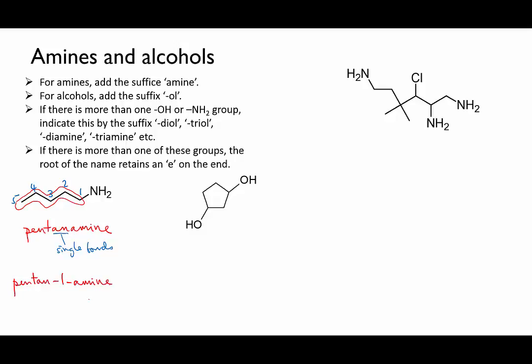So the second one. Here the main chain is a ring made of five carbons, so it's based on cyclopentane. Now if we pretend for a second that there's only one alcohol group attached, then the name would be cyclopentanol. But there are two of them, so we indicate this by calling it a diol, two alcohols, and the name becomes cyclopentanediol.